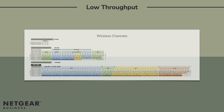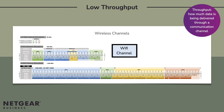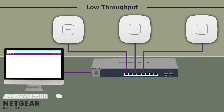Throughput is the term used to define how much data is being delivered through a communication channel — in this case, a Wi-Fi channel. We use the term channel utilization when describing the efficiency of any given channel, and often express that as a percentage. For example, if the throughput of an ethernet connection is one gigabit per second and the throughput is 600 megabits per second, then the channel efficiency or utilization is 60%.